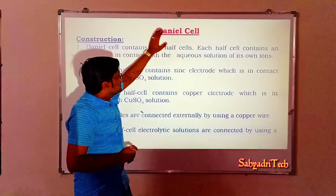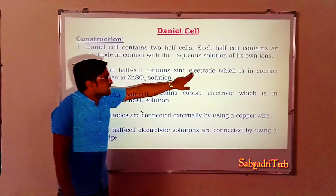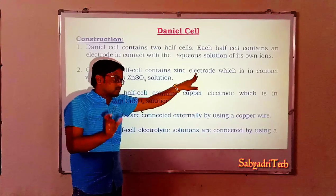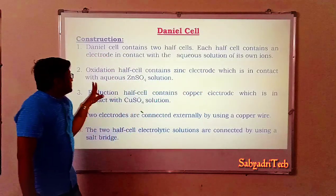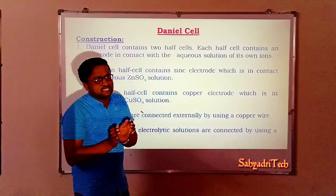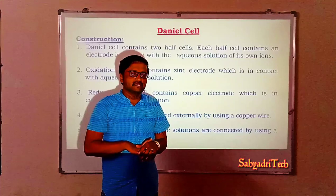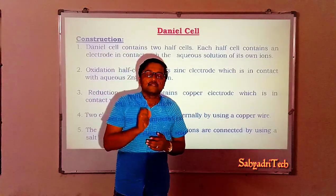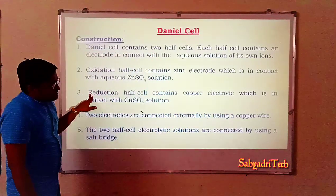In the case of the Daniel cell, the oxidation half cell contains a zinc electrode in contact with the aqueous zinc sulfate solution. The zinc plate is immersed in a zinc sulfate solution, and it acts as the oxidation half cell.